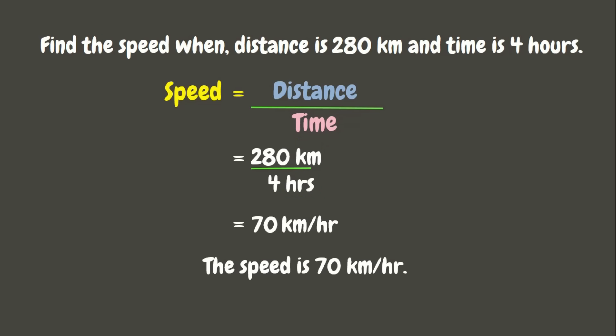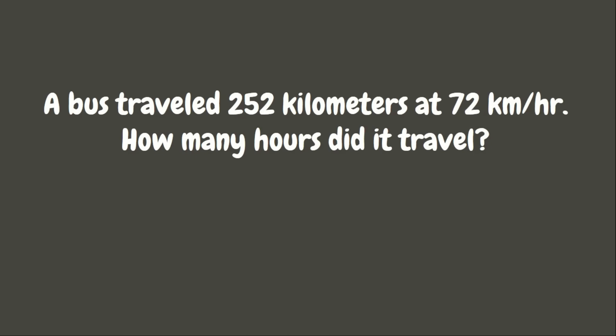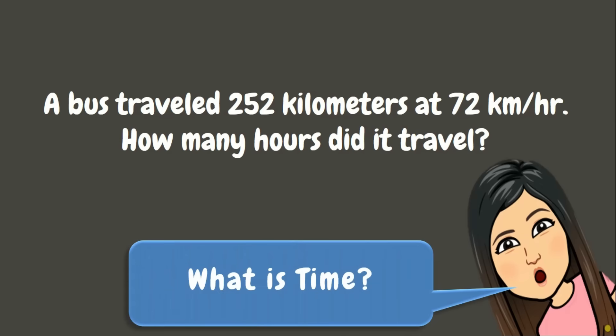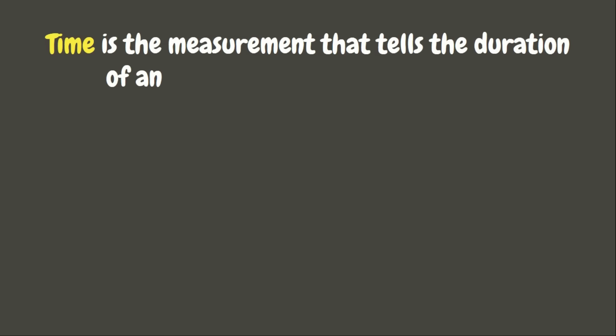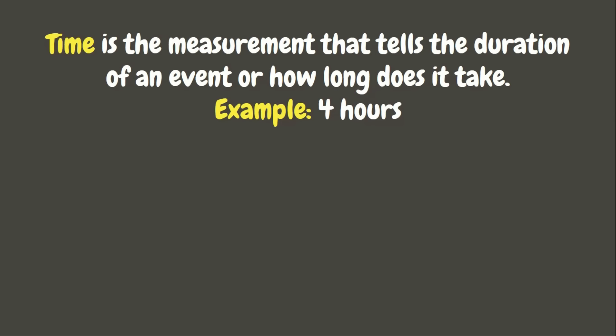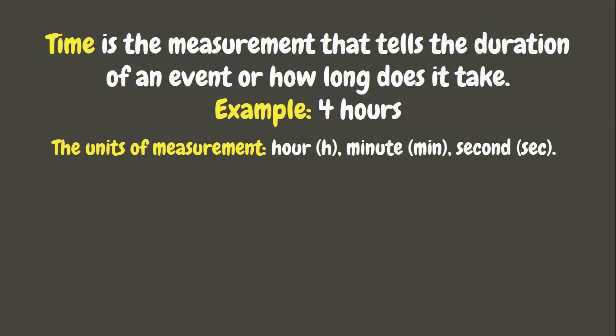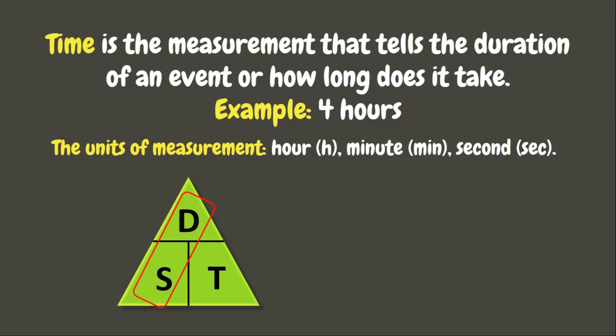Now, let's go to our next problem. A bus traveled 252 kilometers at 72 kilometers per hour. Now, how many hours did it travel? This time, we are looking for the time. But what is time? Time is the measurement that tells the duration of an event or how long does it take. For example, we have 4 hours. The units of measurement for time can be hour, minute, or second. Now, to solve for the time, we are just simply going to divide the distance by the speed.